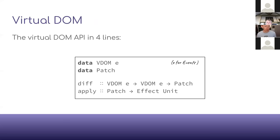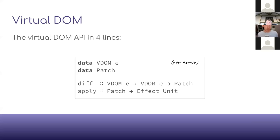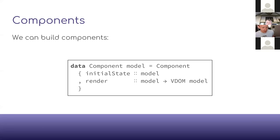Virtual DOM has made all of this quite simple, and many libraries use this approach now. The API can be summarized like this: you have a data type of virtual DOM representations with a type argument E representing events — data that can be bubbled up from mouse clicks and keyboard presses. There's a Patch data type representing the difference between two virtual DOM representations, a diff function that takes a pair and gives a Patch, and an apply function that patches that onto the actual DOM.